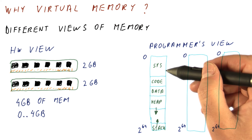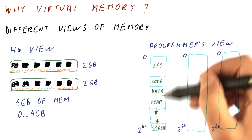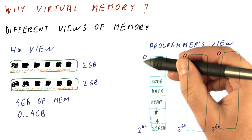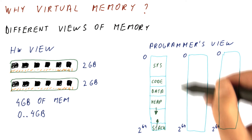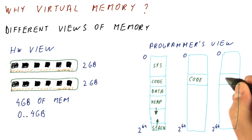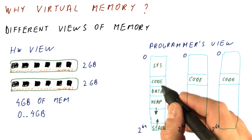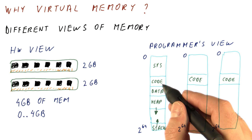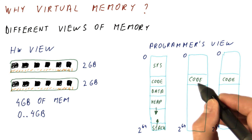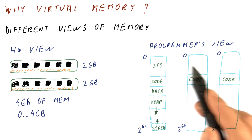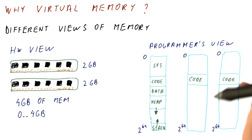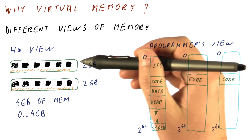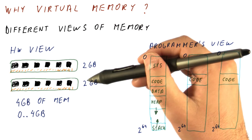That means each program thinks it has all of this memory. So as far as these two programs are concerned, their code might well be at the same address in each program, although in fact they have different instructions at those addresses. So virtual memory is a way of reconciling how the programmers view memory and how the hardware actually needs to view memory in order to work.